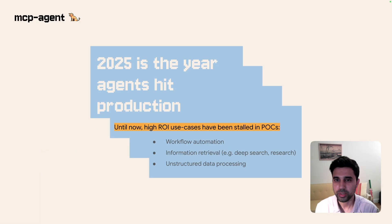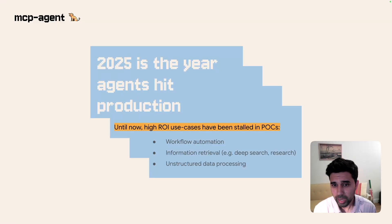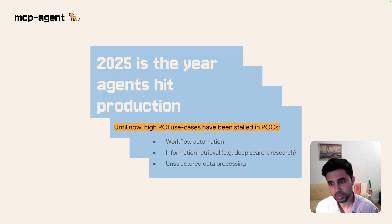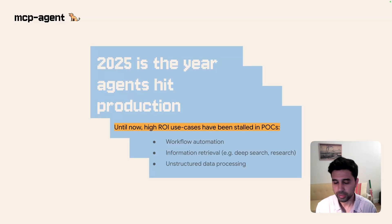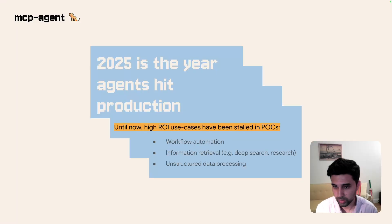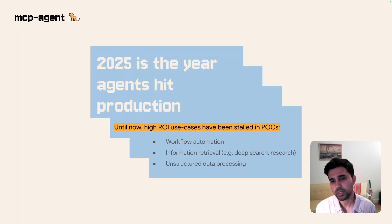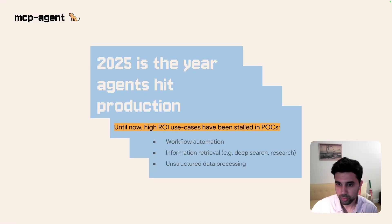I think 2025 is the year that agents hit production en masse. Until now, there have been a lot of high-impact use cases that customers see that have been stalled at proof-of-concept stage — things like workflow automation, dealing with unstructured data and processing it in interesting ways, and information retrieval. You're starting to see agents appear in each of these categories already, and I think that pattern will accelerate in the coming months.